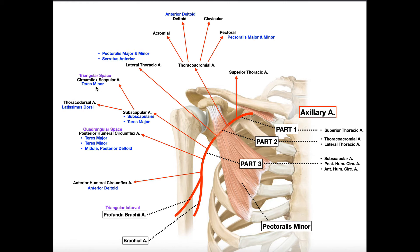The circumflex scapular artery gives blood to teres minor. Importantly, this artery travels through one of the three spaces that allow exit from the axilla — the triangular space. So the circumflex scapular artery begins in the axilla, exits through the triangular space, and supplies blood to teres minor.